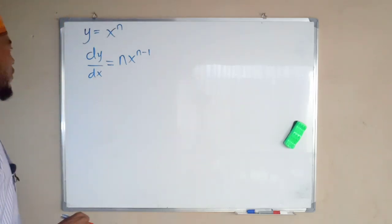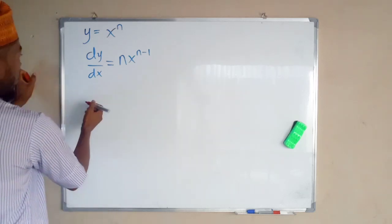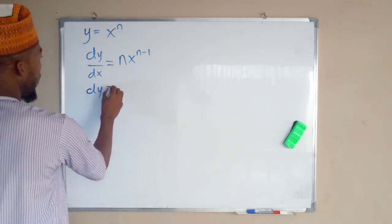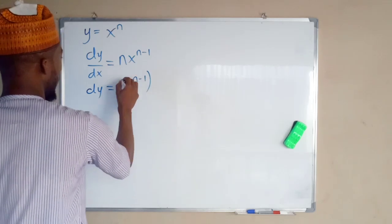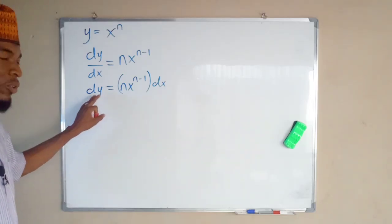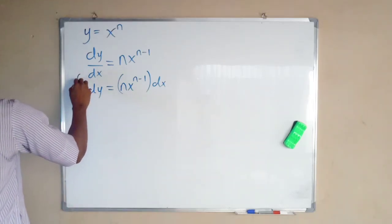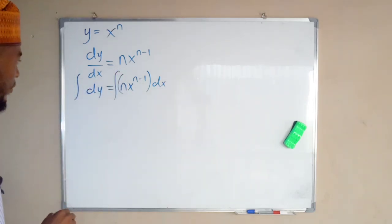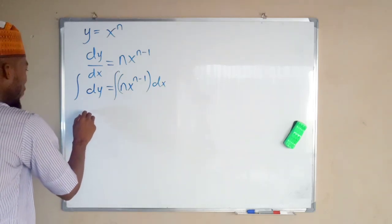What we are going to do now is multiply both sides by dx, thereby obtaining dy = n times x to the power of n minus one dx. Now we are going to integrate both sides — integrating the left hand side using the sign of integration, and we also have to integrate the other side with respect to x.